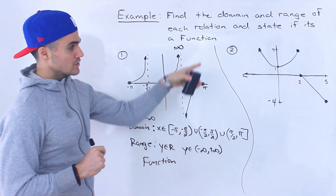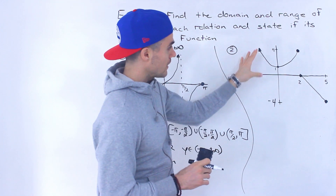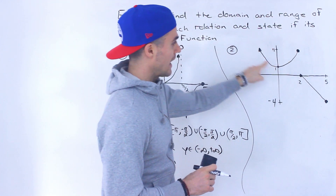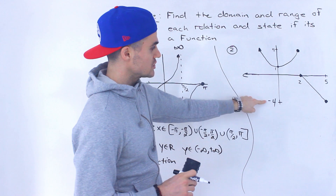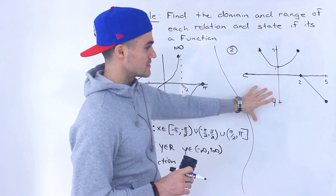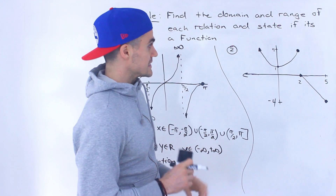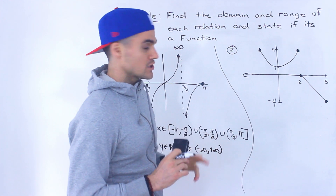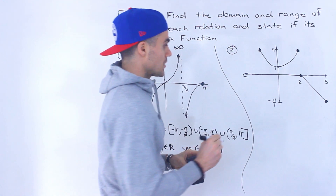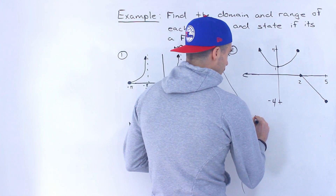Moving on to the second graph, notice it has a line here and then a parabola over here. I added the y value of negative four because we're actually going to need it for stating the range specifically. Let's start off with the domain.